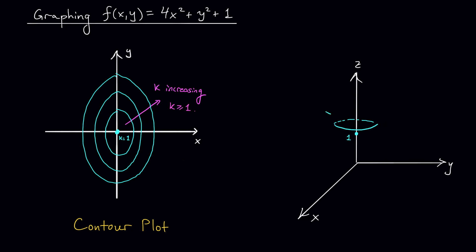And when k gets bigger, the ellipses get bigger as well. So I stack up more ellipses this way, and the shape of my function is starting to emerge. This graph looks pretty similar to what we had in the last video, right?